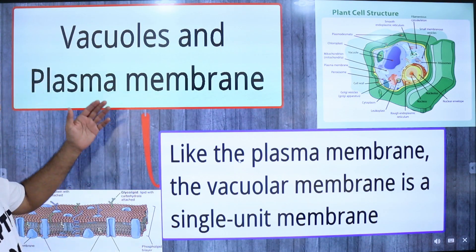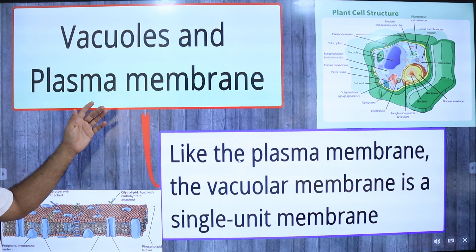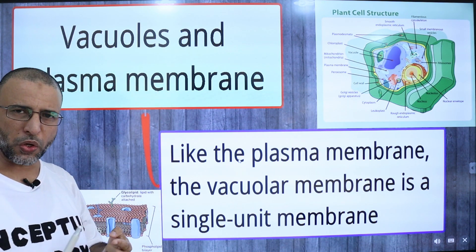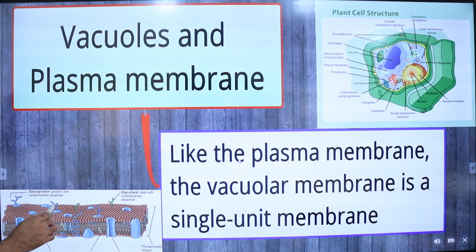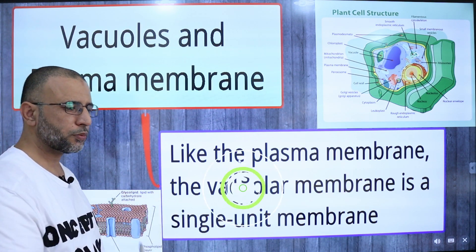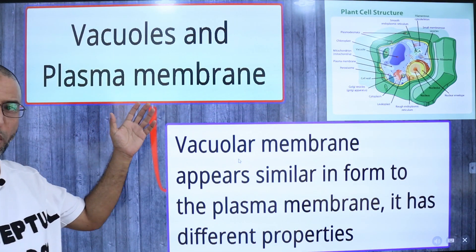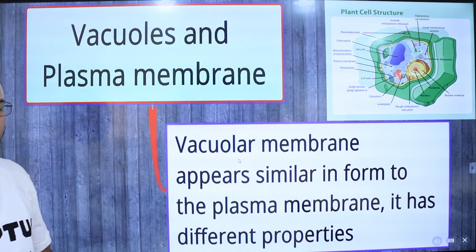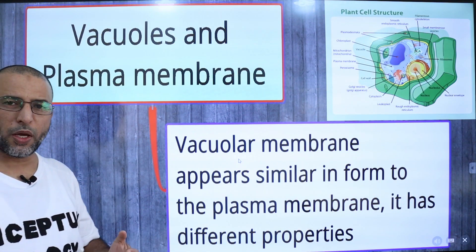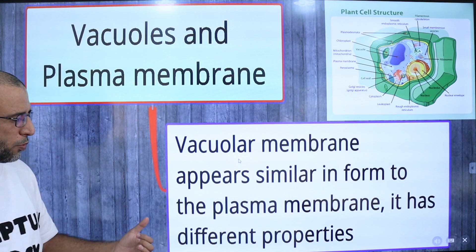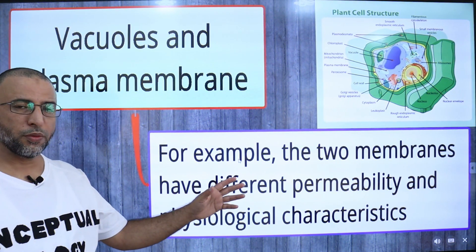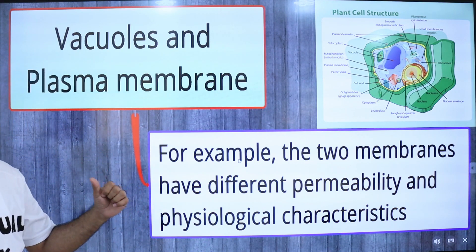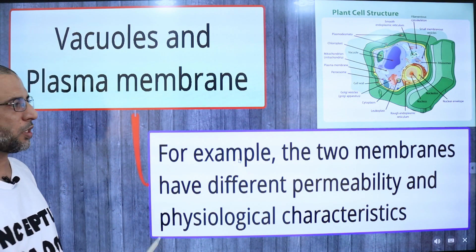What is the similarity between vacuoles and plasma membrane? The membrane of vacuole is known as tonoplast. Tonoplast and the plasma membrane are both composed of a lipid bilayer with embedded proteins. The vacuolar membrane appears similar in form to plasma membrane but has different properties — the two membranes have different permeability and physiological characteristics.